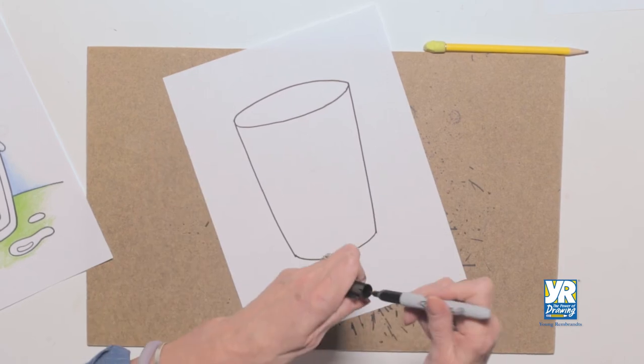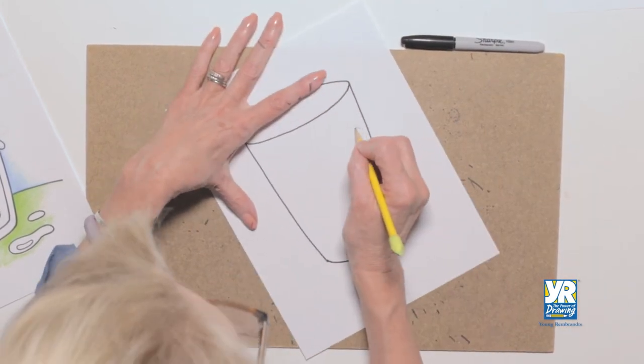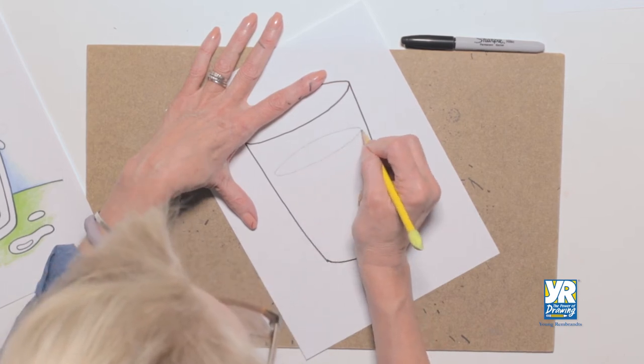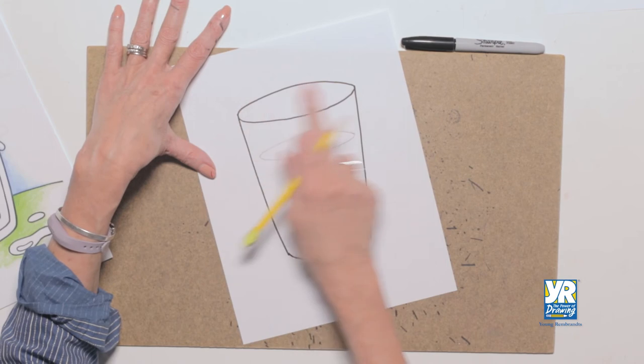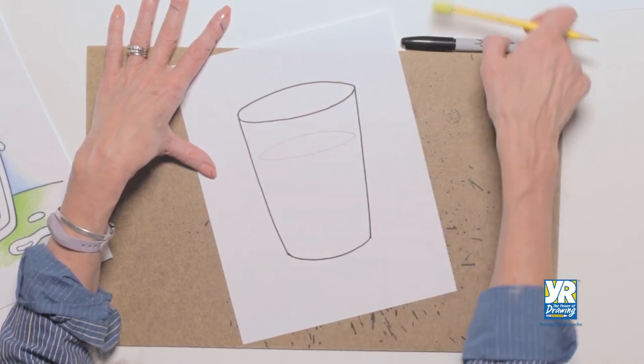Now on the inside we're gonna do the same curve but I'm gonna switch to pencil for the top oval and I'll explain why in just a minute. But now we need to do some erasing later. But see, it's that oval, same oval but a little bit smaller.